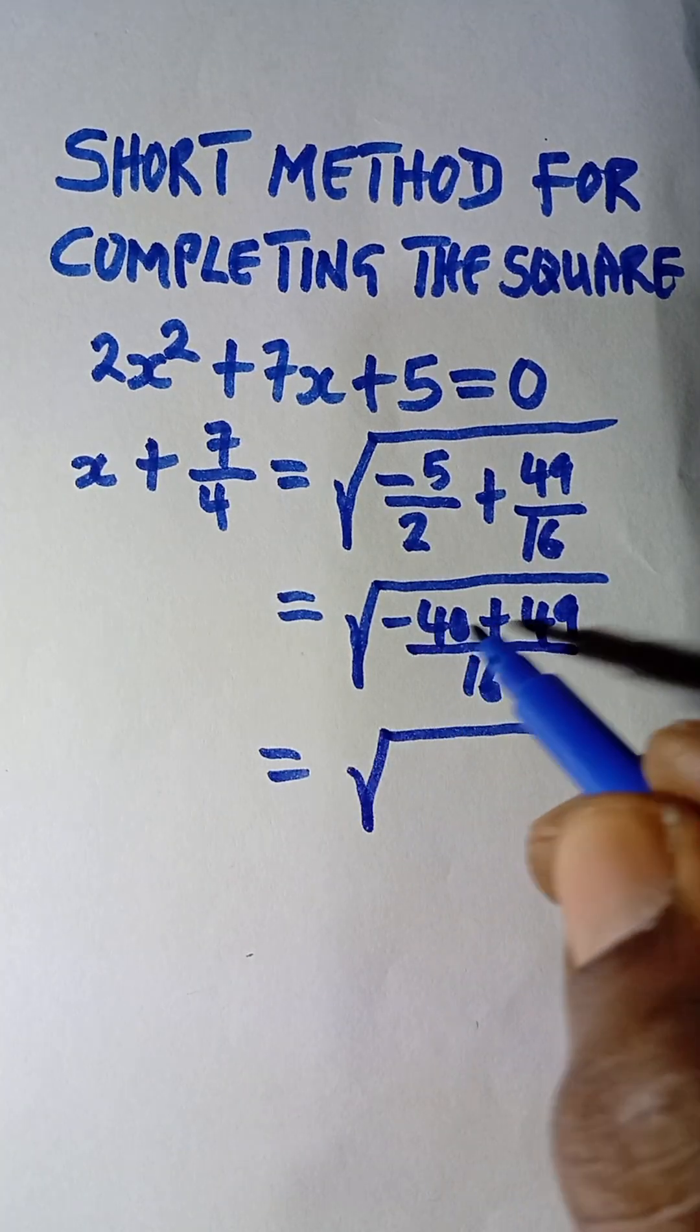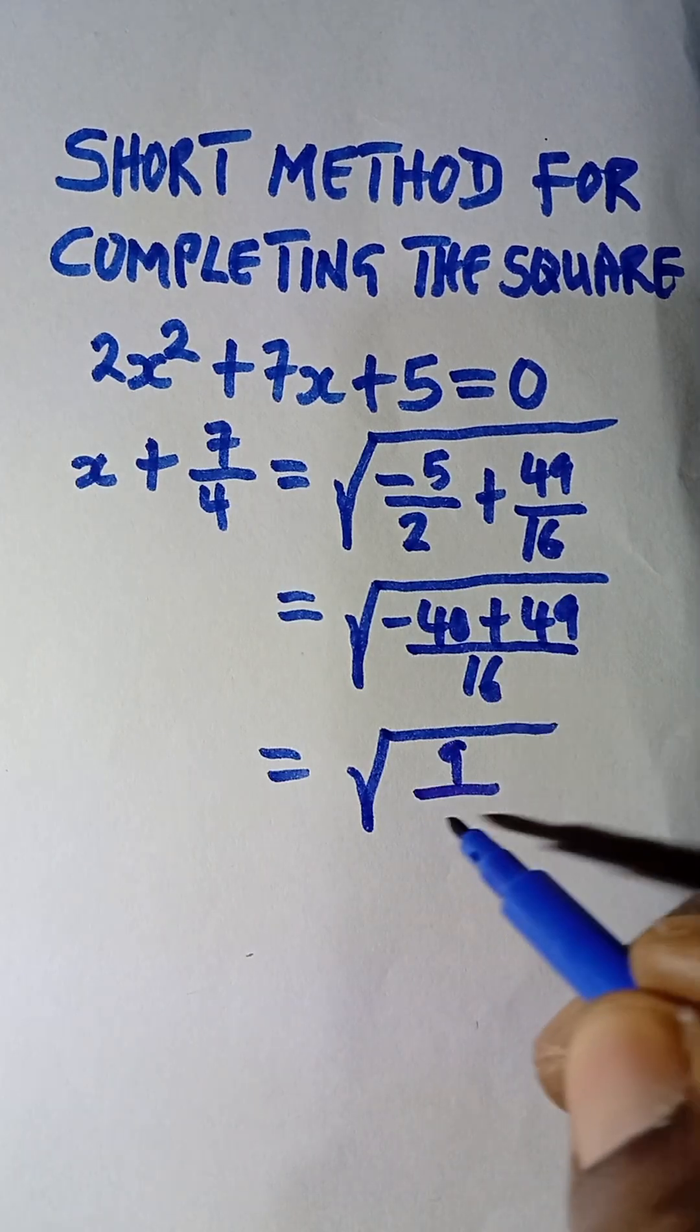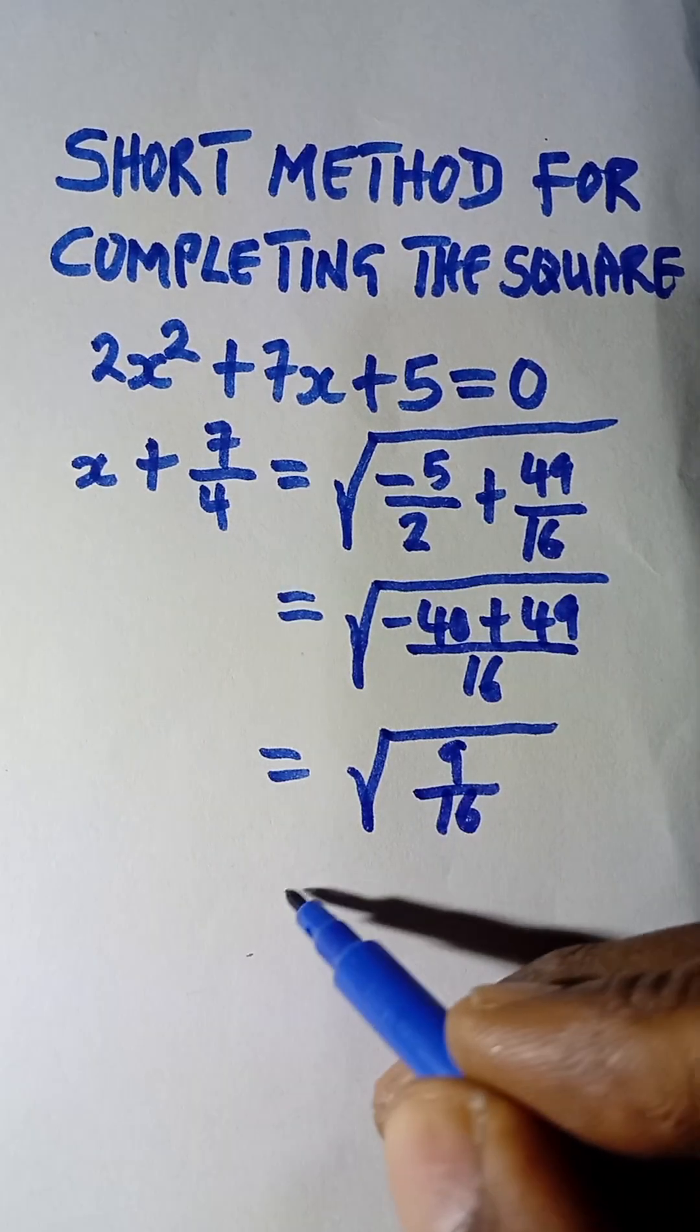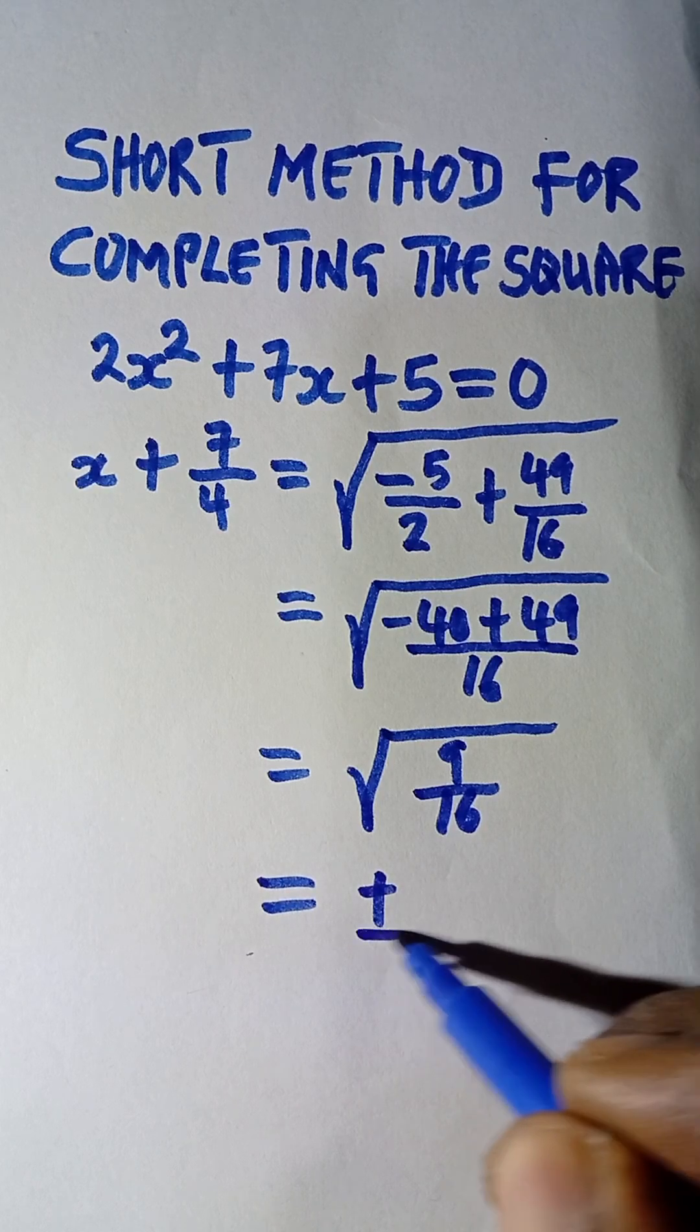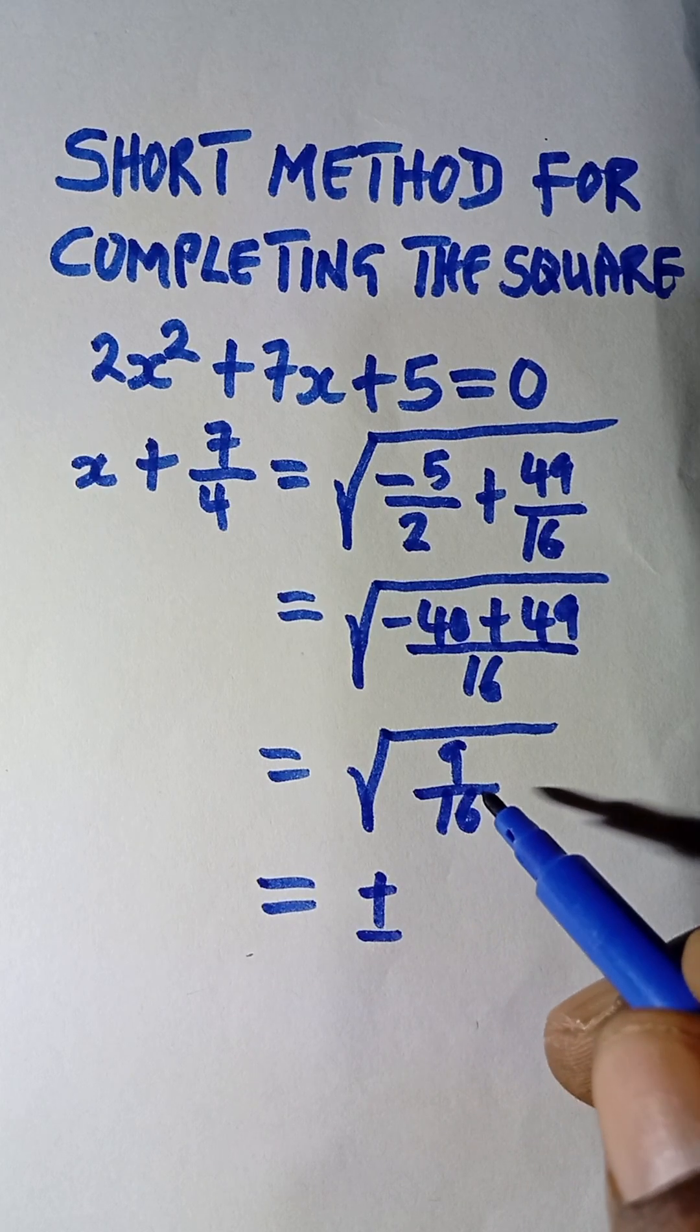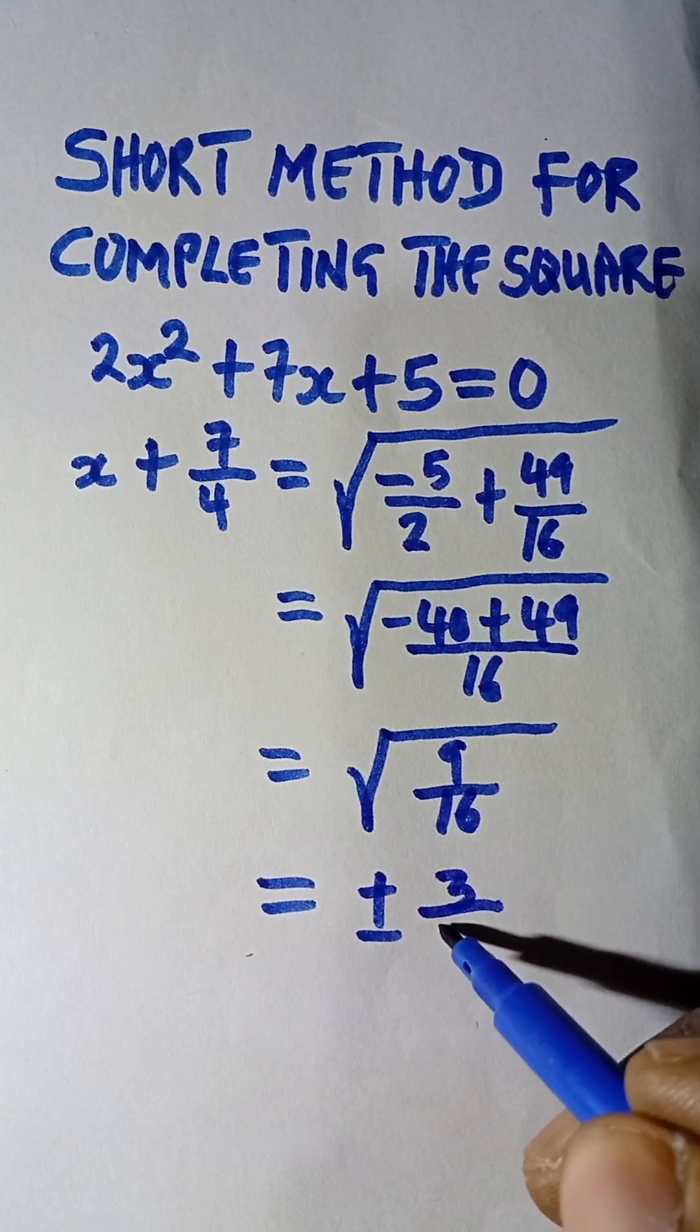So the next thing is to take the square root. Minus 40 plus 49 is 9 over 16. So the square root of 9 over 16 is plus or minus - the square root of 9 is 3 and the square root of 16 is 4.